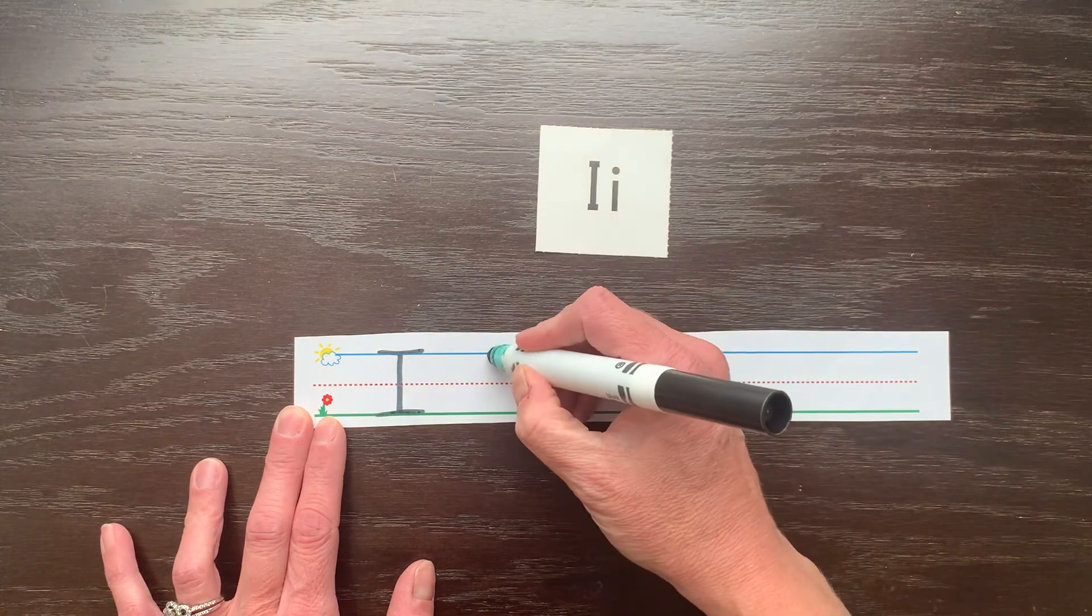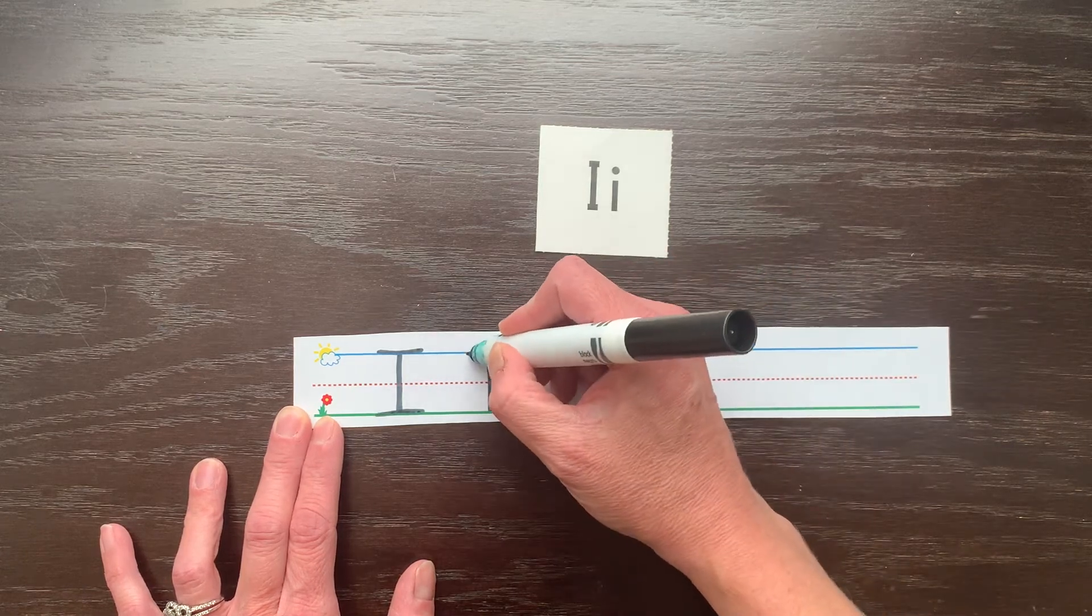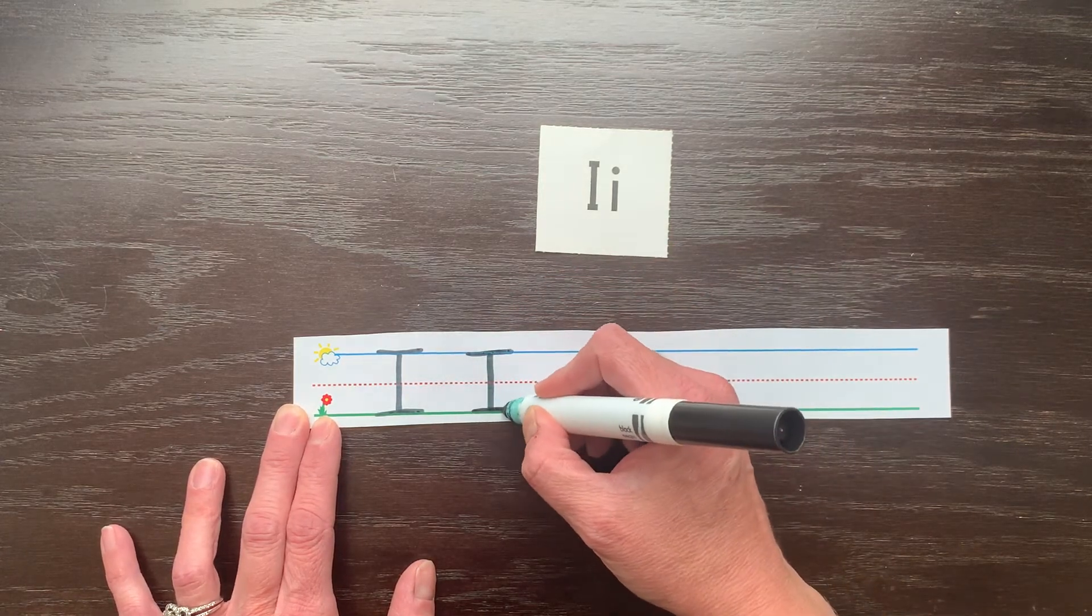Let's try one more time. Start at the top. Make the big line drop. Pick your pencil up. Add a hat and then a boot or a line at the bottom.